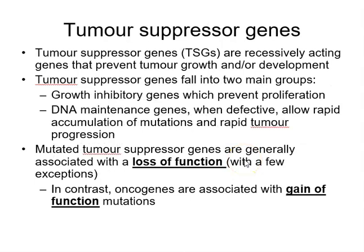Tumour suppressor genes were introduced in the previous lecture, including P53 and PRB, but here we look at more detail. Tumour suppressor genes are recessively acting genes, meaning you need to lose both copies to have any effect on the cell. If the cell retains one good copy it will function relatively normally; if it loses two copies it will cease to have tumour suppressor gene function.